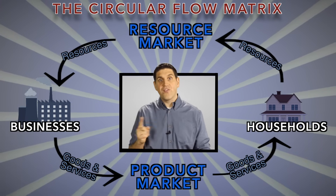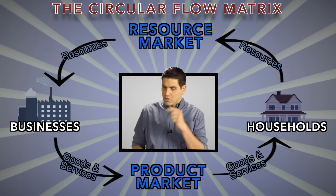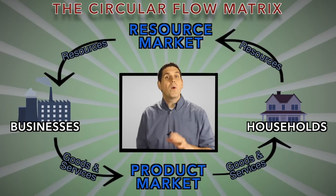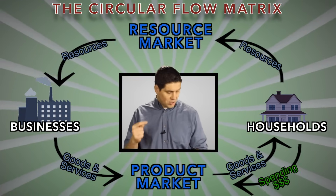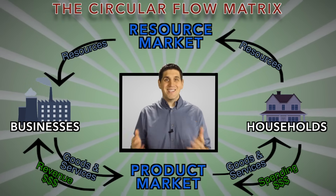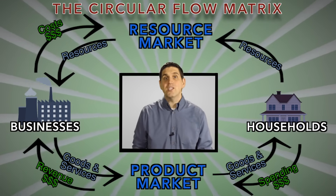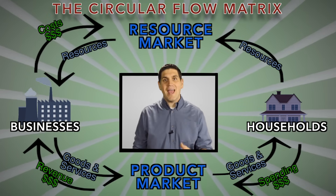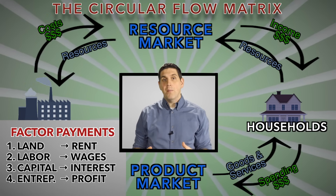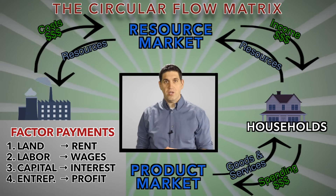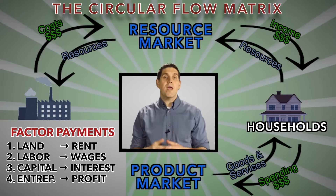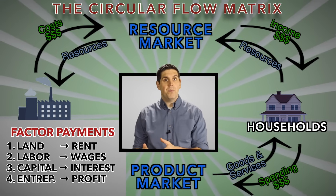That's why it's called the circular flow matrix — those resources are being used by the business to produce the products that people turn around and go buy. Now, what about money? It goes the other direction. When you buy your phone in the product market, you had to pay them money. That's called consumer spending. That money makes its way to the businesses, and they call it revenue. But the business doesn't get to keep all that money — they've got to pay for resources, and that's called the cost of production. It's being paid to engineers that develop the phone; those engineers earned income. Economists break down income into four different types that go along with each of the four factors of production — they're called factor payments. When you sell land, you earn rent. When you sell labor, you earn wages. For capital, you get interest. And for entrepreneurship, you get profit.